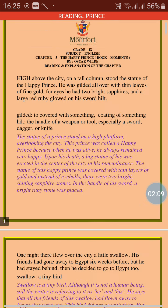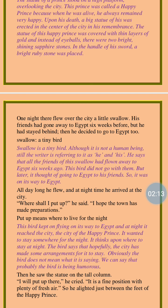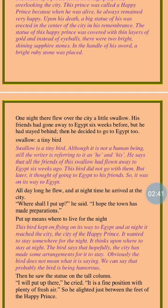One night there flew over the city a little swallow. His friends had gone away to Egypt six weeks before, but he had stayed behind, and then he decided to go to Egypt too. A swallow is a tiny bird. The pronoun 'he' refers to the little swallow here — ordinarily for birds we use 'it', but in these lines the pronoun 'he' is used for the swallow bird. When he was moving around the city, he could see the statue of the Happy Prince, and he was going to Egypt because all his friends had already gone there.